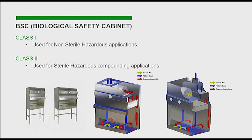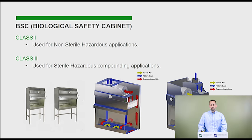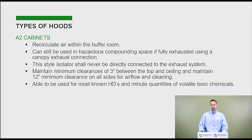There are two types of biosafety cabinets: class one and class two. Class one biosafety cabinets are used for non-sterile hazardous applications. Class two are used for sterile hazardous applications and are used in the classic buffer room found in a lot of facilities right now. They both create a sterile environment for IV preparation and also exhaust the hazards out of the building for the protection of the pharmacist. There are two different types of class two hoods: A2 and B2.